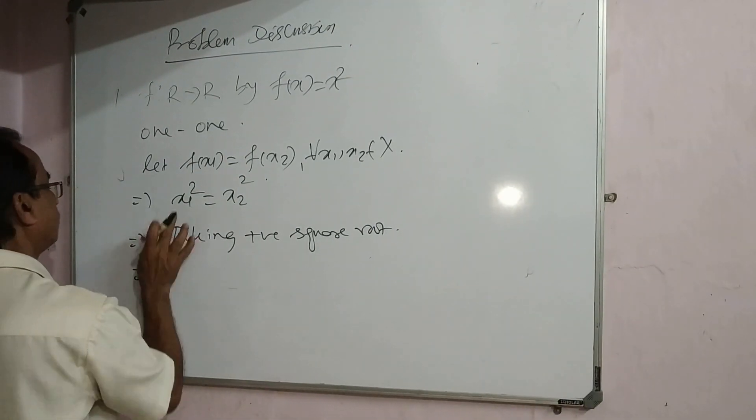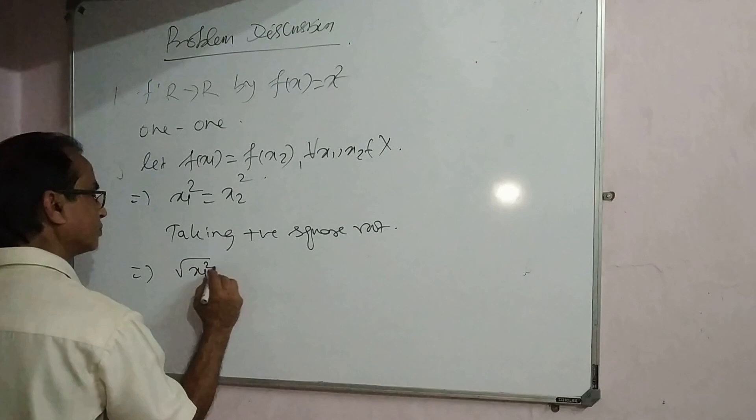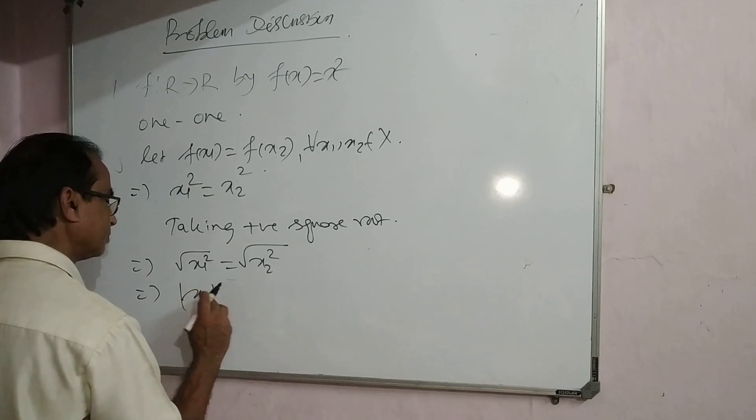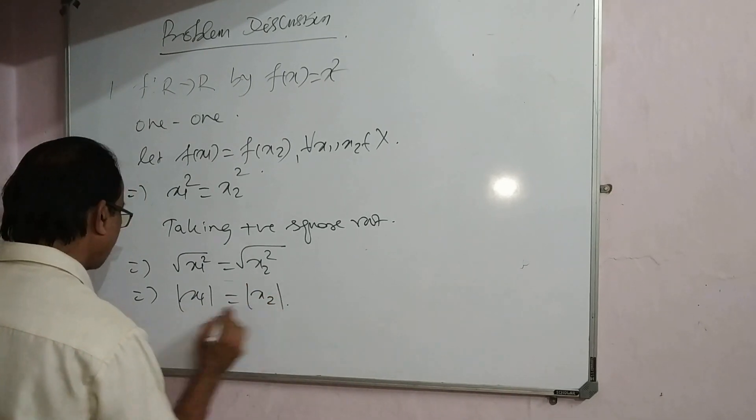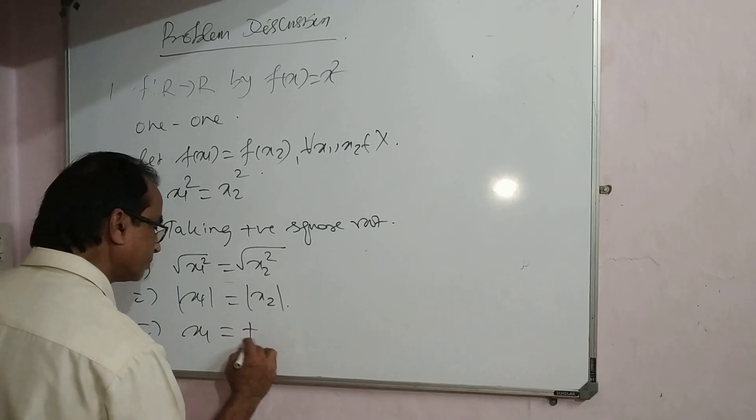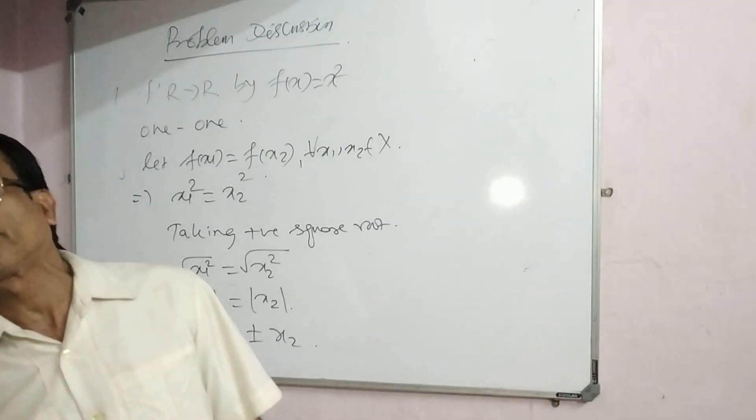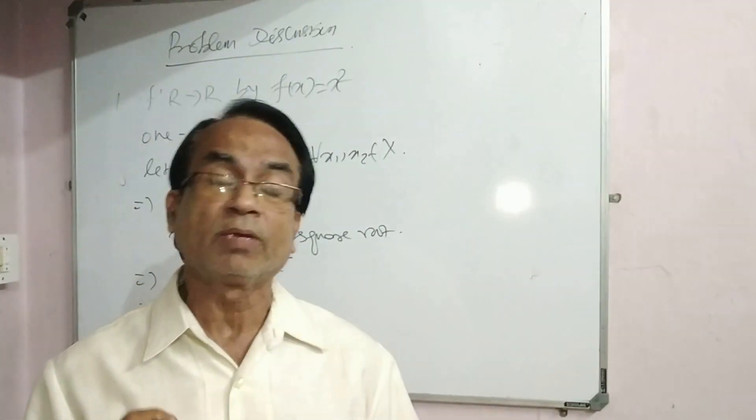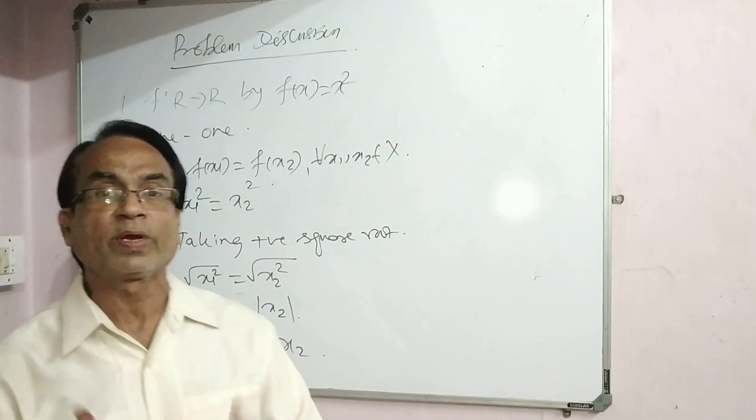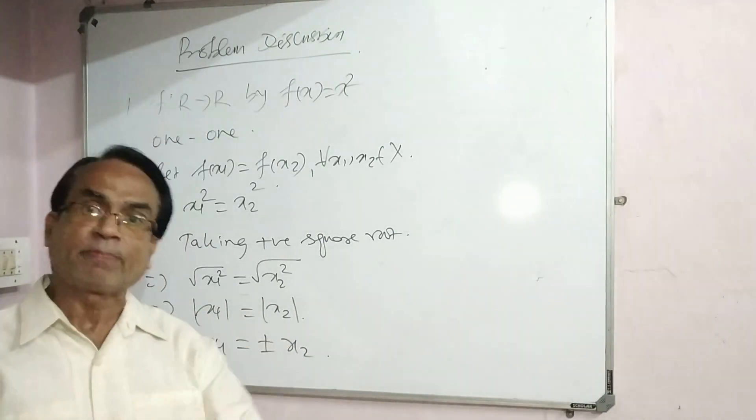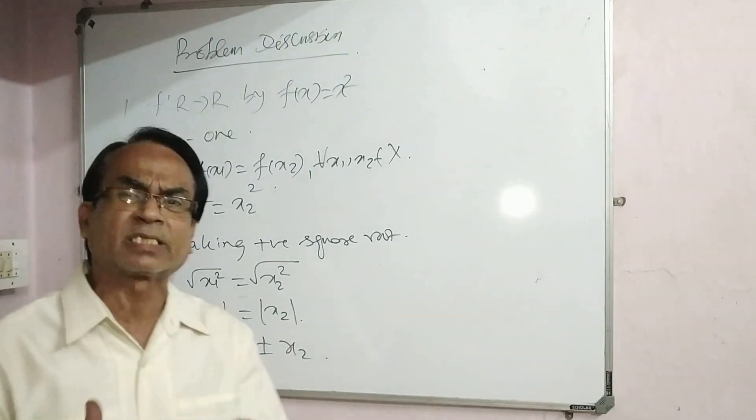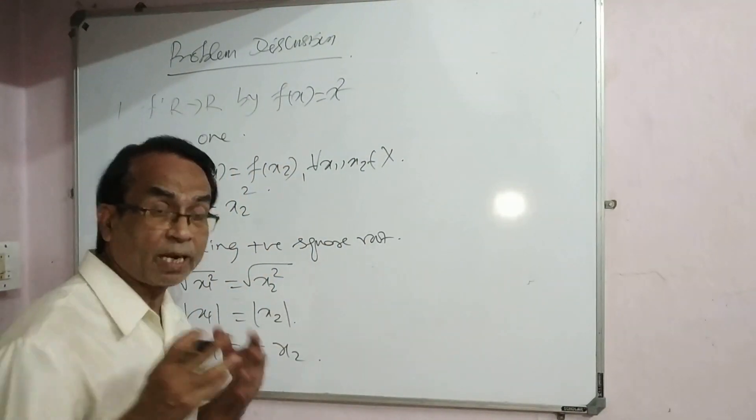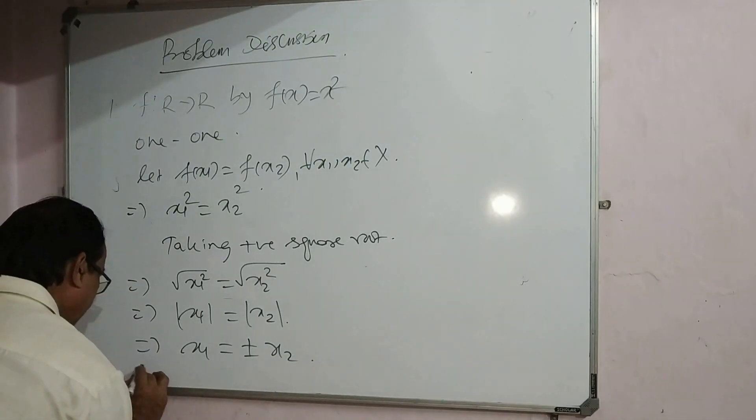Taking positive square root, we get modulus of x1 equals modulus of x2, which implies x1 equals plus or minus x2. In the real number domain with positive and negative real numbers, when we lift the modular sign, plus or minus is there. This implies it is not one-one.